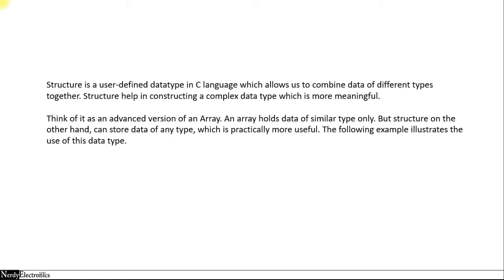Structures help us in constructing a complex data type which is more meaningful — just like the name, price, and number of pages of a book. Those are different data types, but we club them together under the name of a book, or similarly the sensor readings of a room. Think of it as an advanced version of an array: an array stores data of only similar type, but structures can store data of any type, which is practically more useful for us.